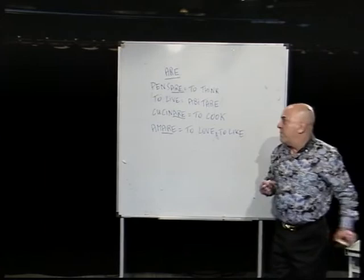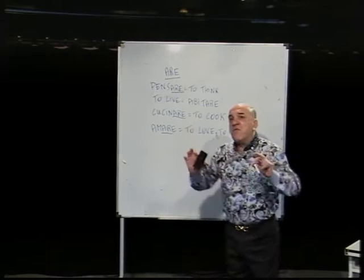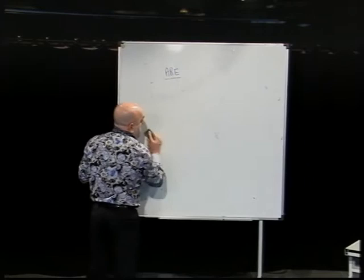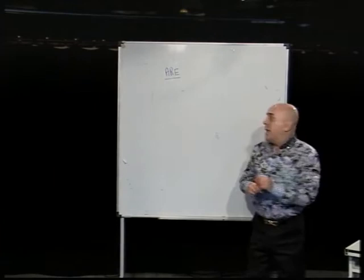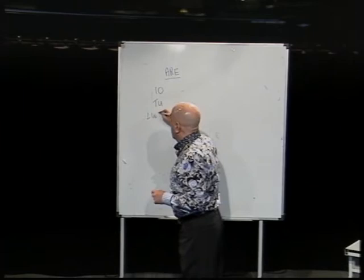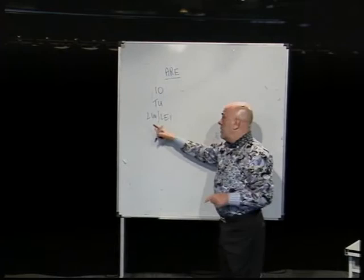In the dictionary you only find the full meaning of the verb, but today we start studying how to use a verb that belongs to the -ARE group depending on the subject. The subjects we look at today are: io (I), tu (you), lui (he), and lei (she).